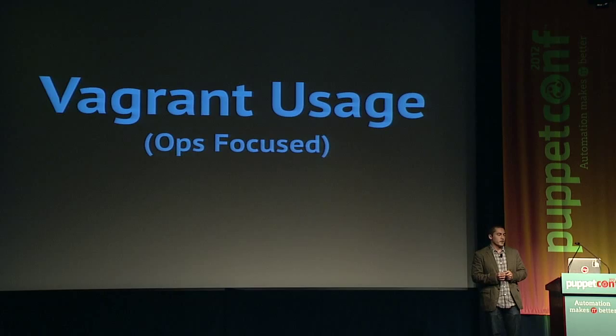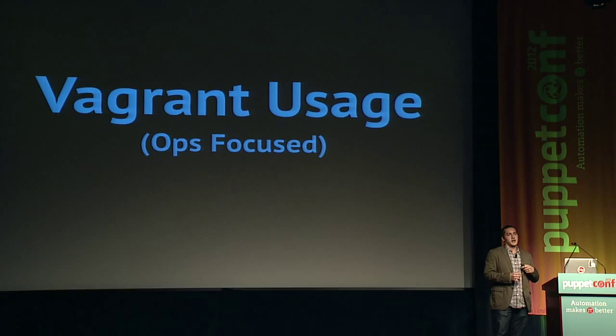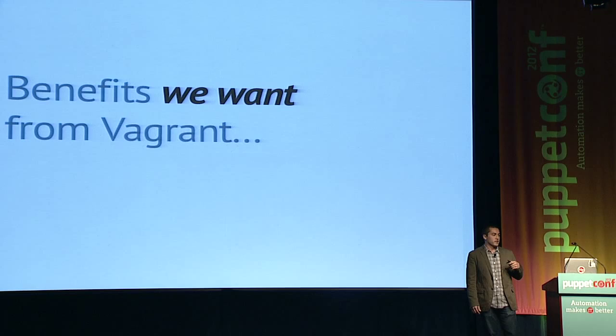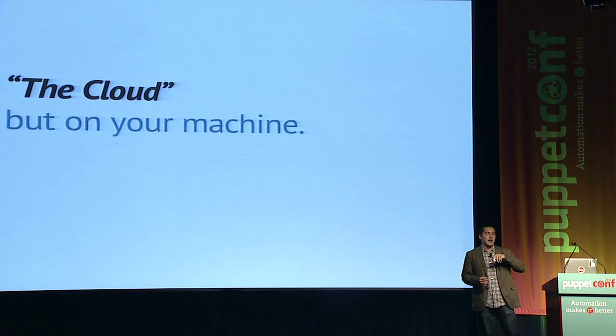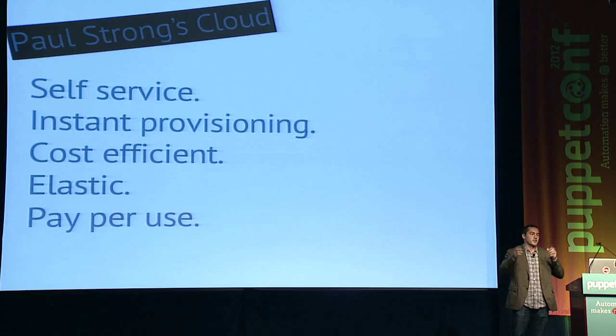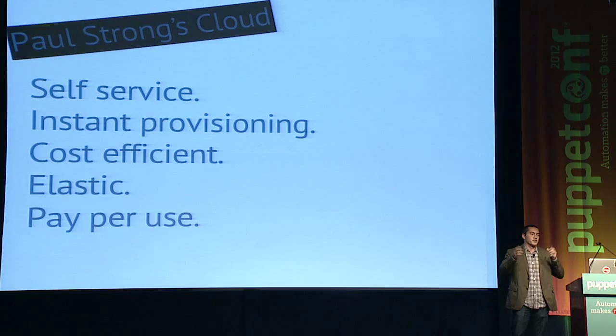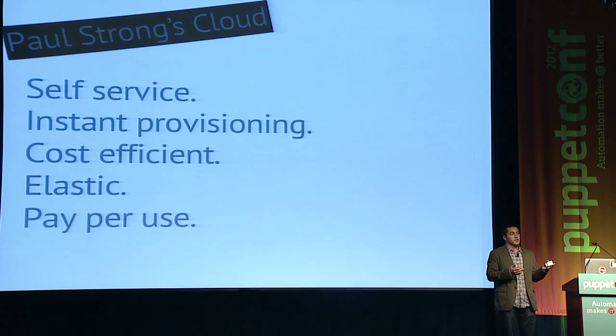Let's quickly talk about Vagrant usage — not how to use it, but on a high level, what we want to get out of it, or why we use it. With a focus on ops, because this is PuppetConf. The benefits we want from Vagrant — and hopefully you saw the keynote from Paul Strong — we basically want the cloud on your own machine. You want something that's self-service, instant provisioning, cost-efficient, and elastic. You want something easy to use, something that doesn't cost a lot of money, and something that's flexible.